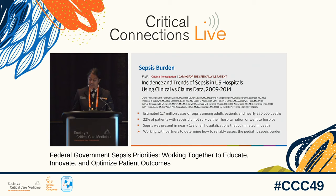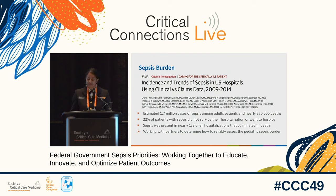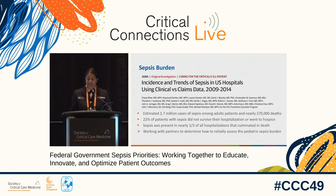Given challenges with defining sepsis, an effort was undertaken in 2014 to develop a surveillance definition informed by clinical data alone, undertaken with the Harvard Prevention EpiCenters, a CDC-funded research network. This demonstrated an estimated 1.7 million cases of sepsis among adult patients and nearly 270,000 deaths. It found that 22% of patients with sepsis did not survive or went to hospice, and sepsis was present in nearly one-third of all hospitalizations that culminated in death. We are working with partners to determine how to reliably assess pediatric sepsis burden.